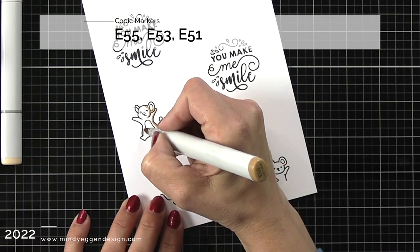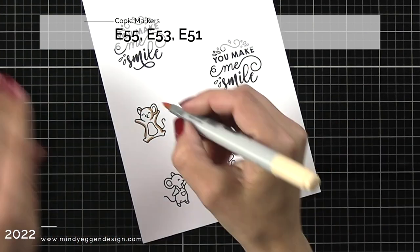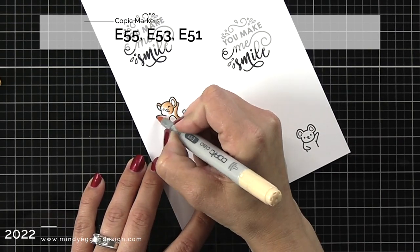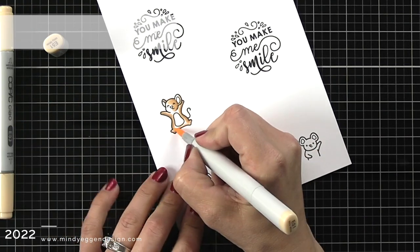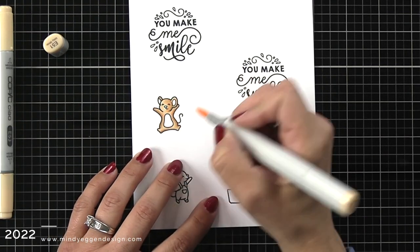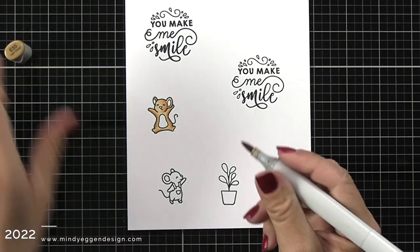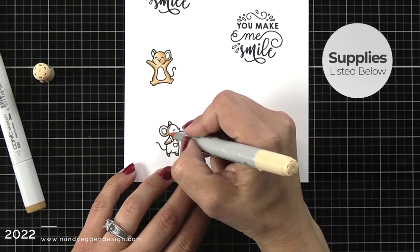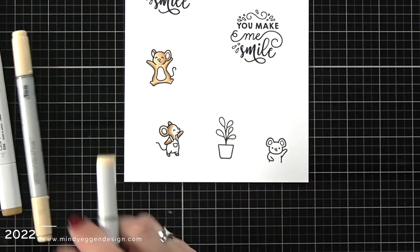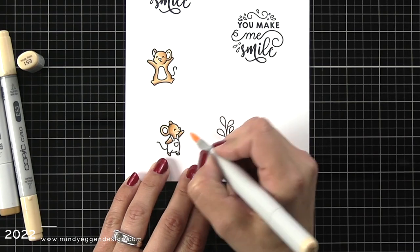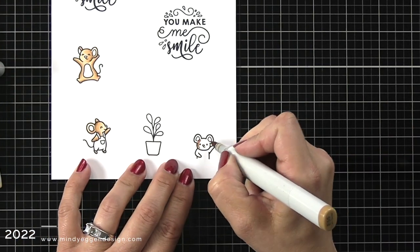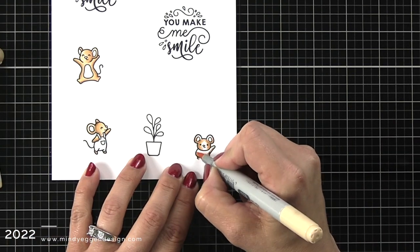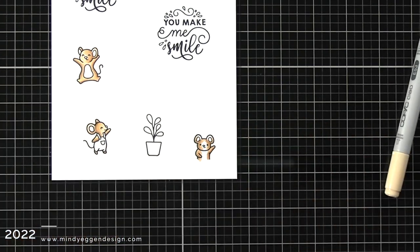I have all of my images stamped in the Lawn Fawn Jet Black ink on 80 pound white cardstock and I'm starting by coloring in my mice using Copic markers. I'm going to have all the colors listed at the top of the screen. For my mice bodies, I'm using E55, E53, and E51 and I'm just adding the darkest shading, the E55, to the back of the mice. For this one, it's the back of the head and under the arms and then blending out with those lightest colors. For this one where it looks like he's waving, I'm adding the darkest color to the outside edges of the face and then blending that out.